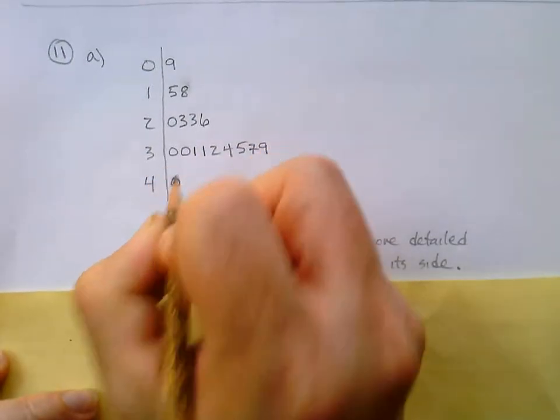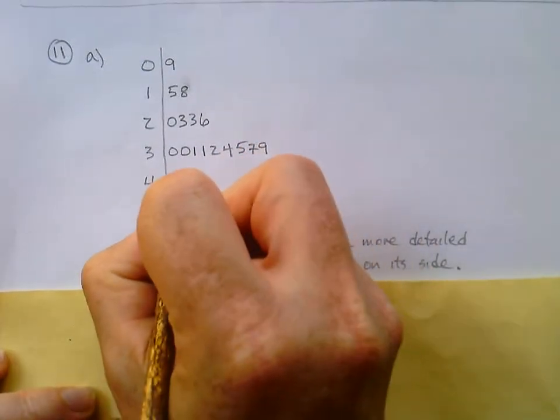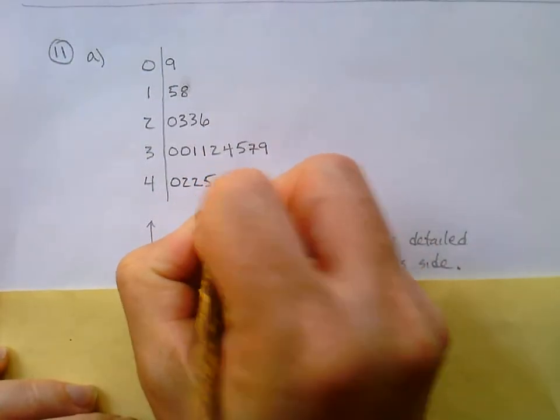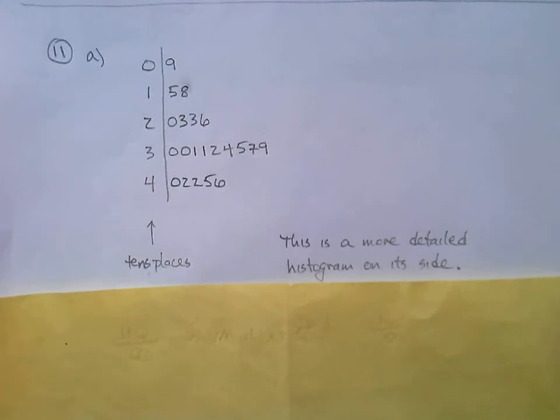And then finally to the 40s, we had a 40. We had 42. We had another 42, 45, and a 46 was the highest. So we can see all of the data right there. And in fact, not only can we see all of the data very nicely, this actually serves a lot of the purposes of a histogram at the same time.